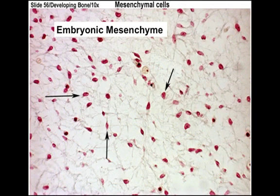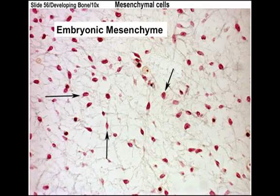Here's a micrograph of embryonic mesenchyme. The arrows are pointing to the cells of the mesenchyme, and then the matrix is the messy portion outside of it. I suspect those are reticular fibers. This is basically a tissue that has not differentiated into another type of connective tissue and is found throughout the body.